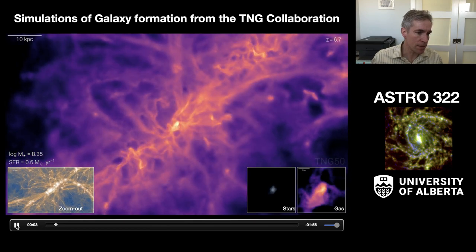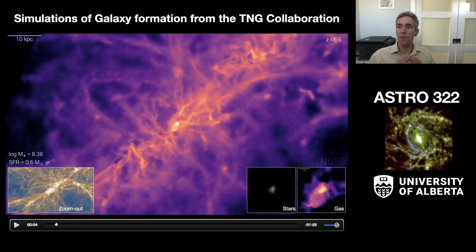I want to start out with a movie. This is a wonderful simulation from the Illustris TNG collaboration, the next generation of this simulation, and it's showing the formation of a galaxy. I want to call your attention to several different features here. The current stellar mass of the galaxy, that's not all the gas and dark matter, it's just what's in stars. The current star formation rate is about 0.6 solar masses per year. For context, our galaxy in the Milky Way has a star formation rate of about 2 to 3 solar masses per year. This zoom out shows dark matter particles in the system, and these little insets show the stars and the gas zoomed in.